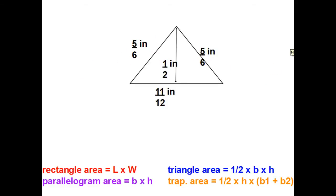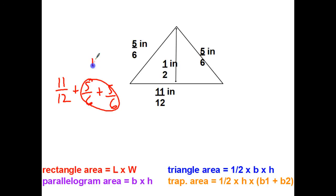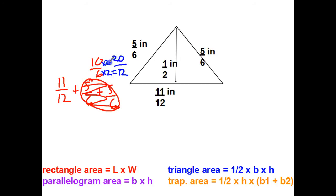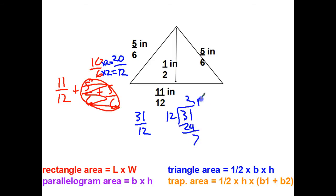Let's try a triangle. For the perimeter, add all the sides: eleven-twelfths plus five-sixths plus five-sixths. Right away I notice five-sixths plus five-sixths is ten-sixths. So now I have eleven-twelfths plus ten-sixths. Rather than cross multiply and get 72, I can see that 6 times 2 gets me to 12, so twelve is a better common denominator. Taking the top times 2: ten-sixths becomes twenty-twelfths. Eleven-twelfths plus twenty-twelfths equals thirty-one twelfths. Dividing: 12 goes in twice with 7 remaining — two and seven-twelfths inches.